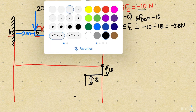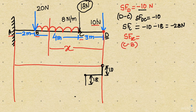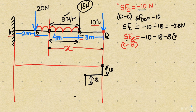Beyond C there is a uniformly distributed load. Whenever we have a UDL, we consider a distance x and write the shear force expression for that x, valid for the C to B region. The expression is: shear force = minus 10 minus 18 minus 8 times (x minus 3). Here 8 is the intensity of the load and (x minus 3) is the distance of the UDL from C.